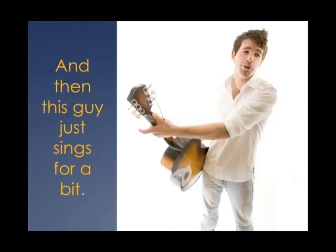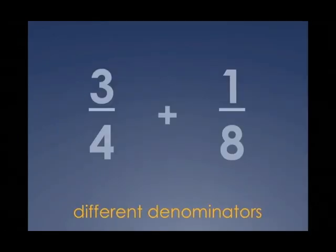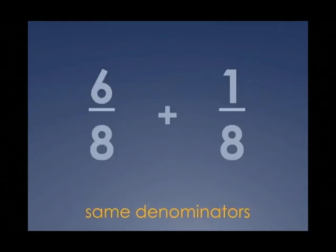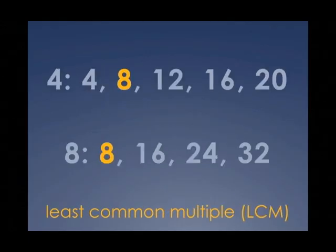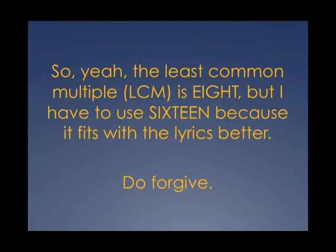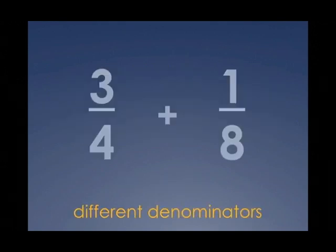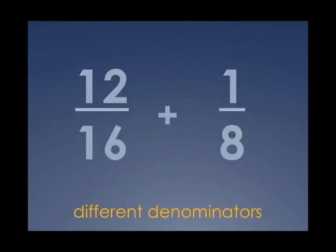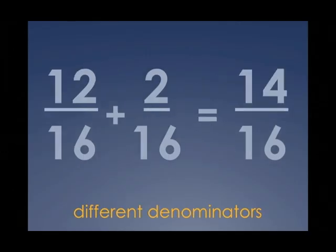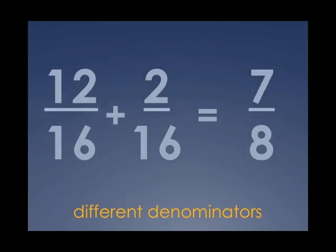These two have different denominators — time for some math now. We need the same denominators so we can add now. So we find the least common multiple, the LCM now, to use as the new denominators for equivalent fractions. Three-fourths is twelve-sixteenths, one-eighth is two-sixteenths. When I add that up it's fourteen-sixteenths, but reduce it and the answer is seven-eighths.